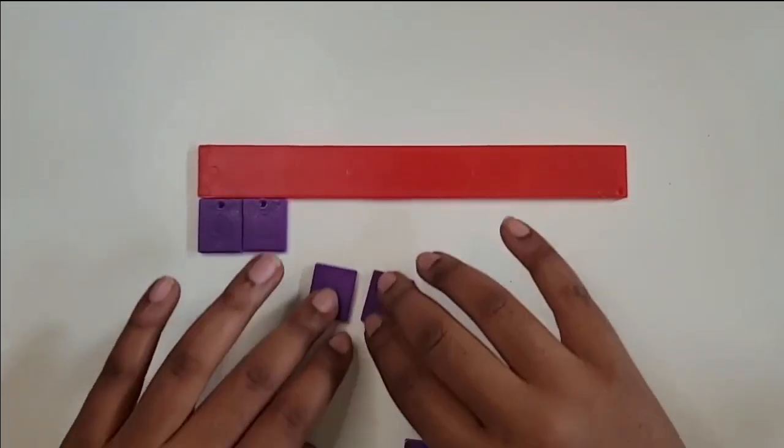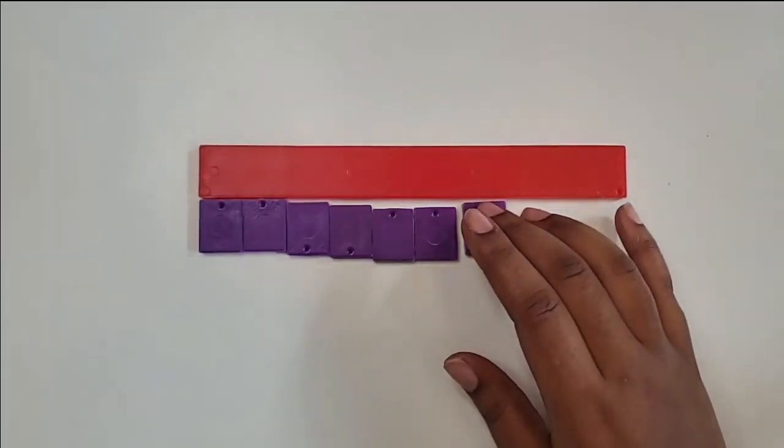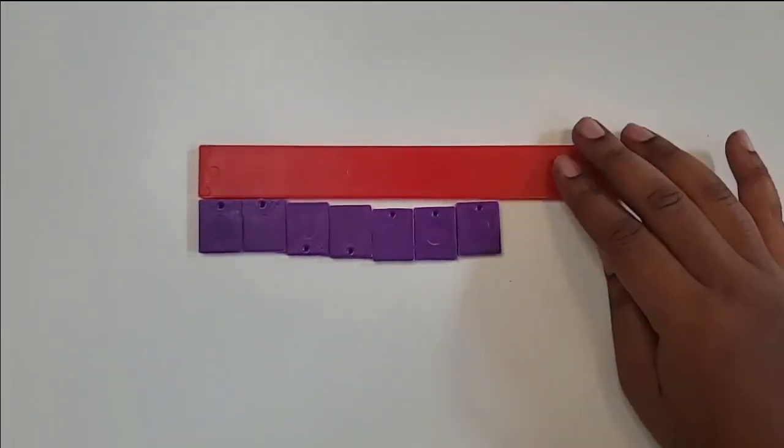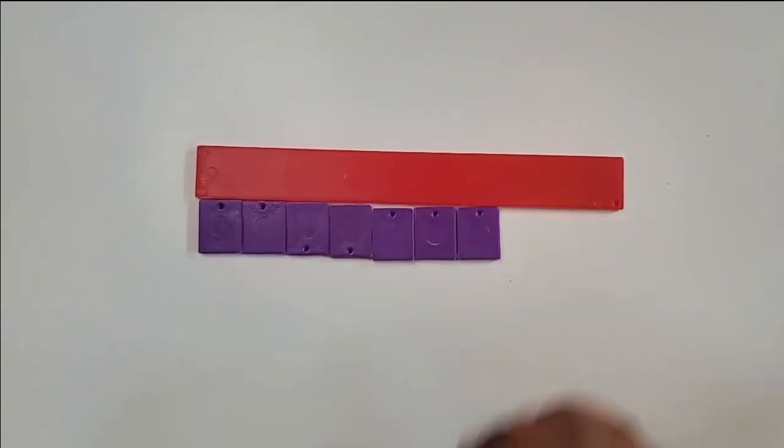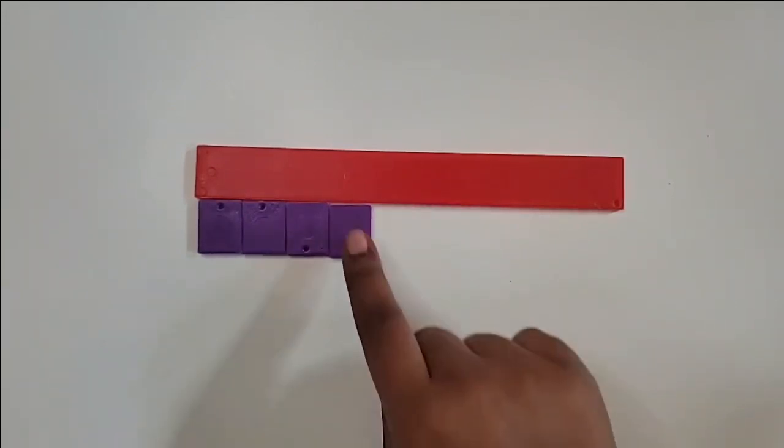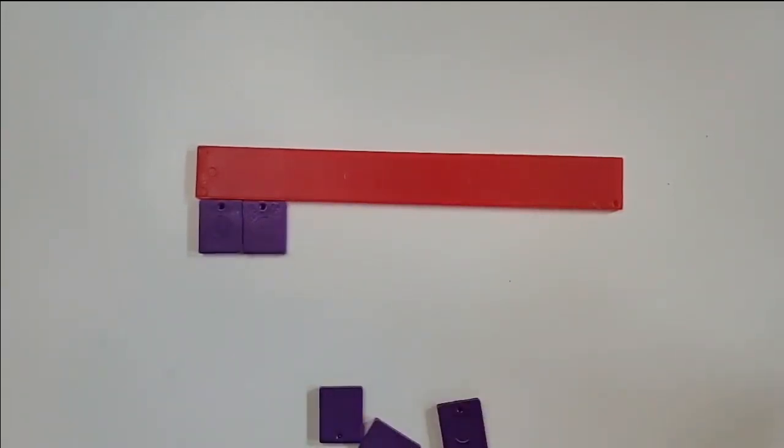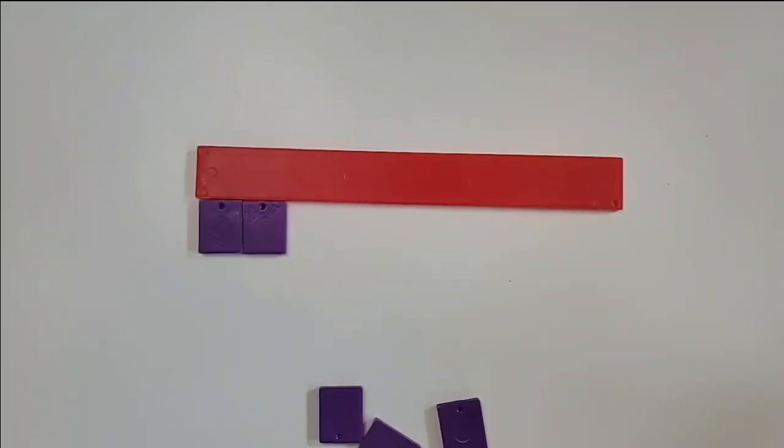So we had seven tenths, seven of these tenth-sized pieces, and we're taking away five of them. One, two, three, four, five. How many are still remaining? Two tenths are still remaining. Seven tenths minus five tenths equals two tenths.